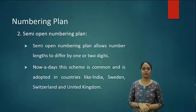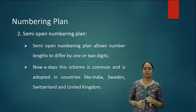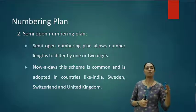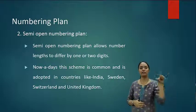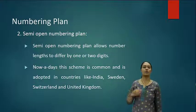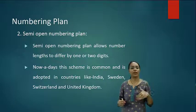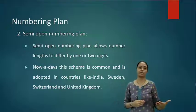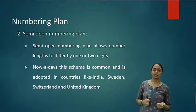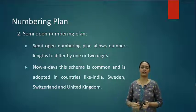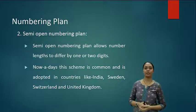In semi-open numbering plan, it allows number length to differ by 1 or 2 digits. Sometimes we receive calls of 4 or 5 digits, or there are spam-related calls which appear in red color on TrueCaller. Those are calls from different countries where the number length is not equal to our country's standard. In fact, within our country there are also certain forms where the number digits do not match our international numbering plan, and those use the semi-open numbering plan.